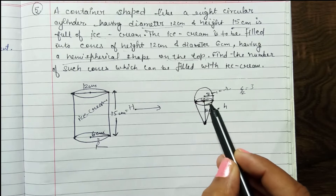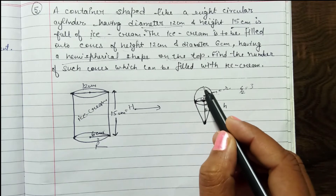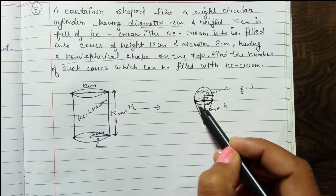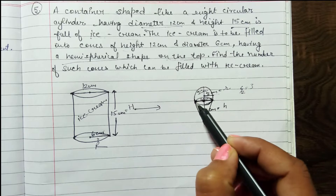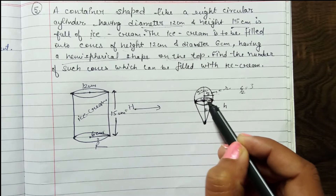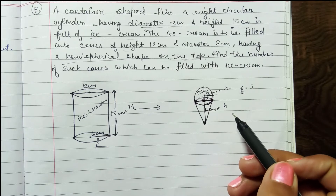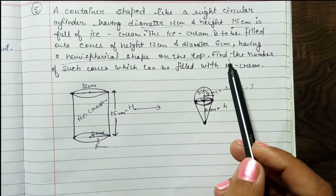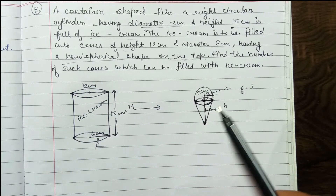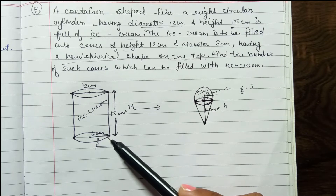Since the cone's radius is 3 cm, the radius of the hemisphere on top is also 3 cm — because the hemisphere sits on the open end of the cone, so both radii are equal. We have to find the number of such cones which can be filled with ice cream.